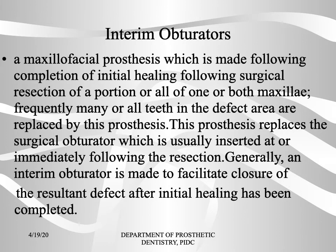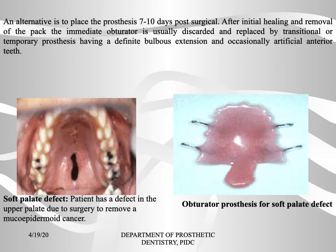An interim obturator is a maxillofacial prosthesis made following completion of initial healing after surgical resection of a portion or all of one or both maxillae. Frequently, many or all teeth in the defect area are replaced by this prosthesis. It replaces the surgical obturator and is generally made to facilitate closure of the resultant defect after initial healing. An alternative is to place this prosthesis 7 to 10 days post-surgical.